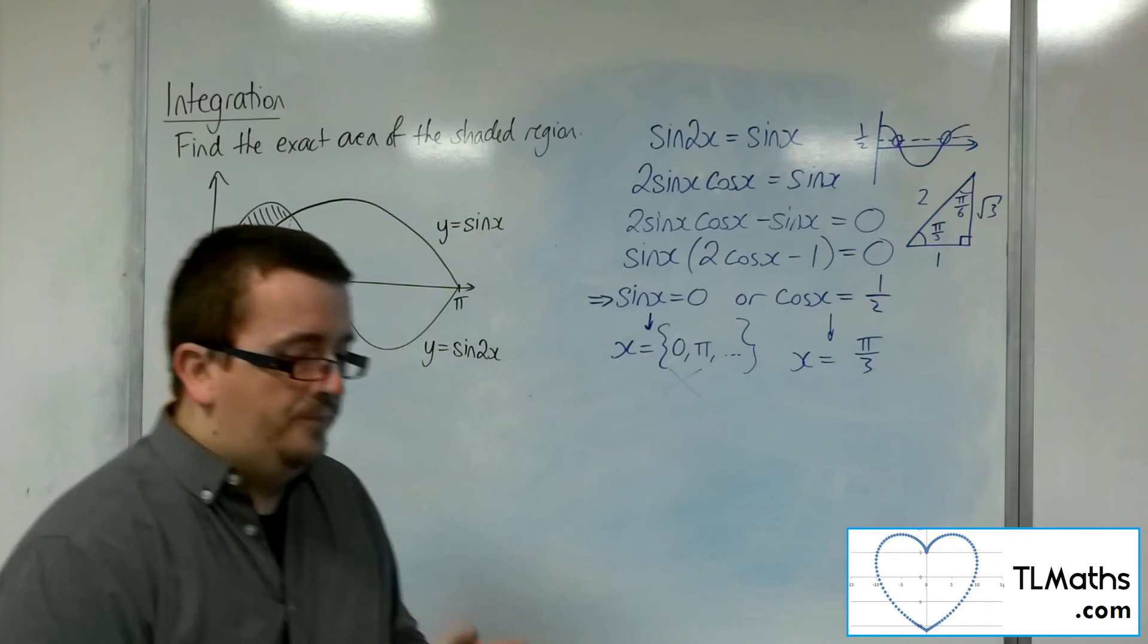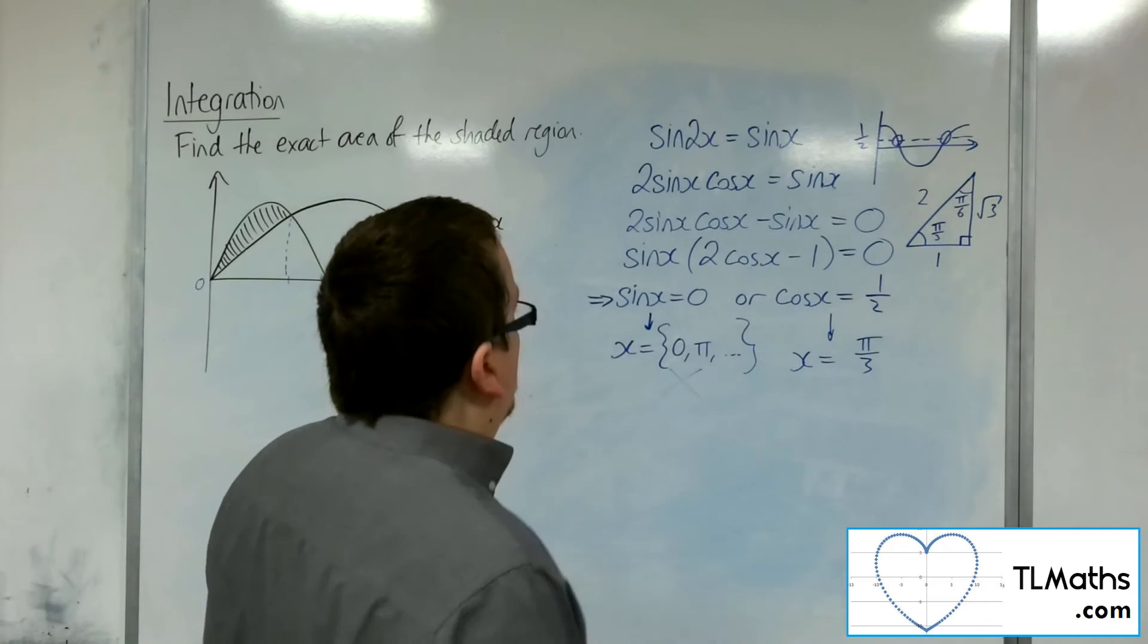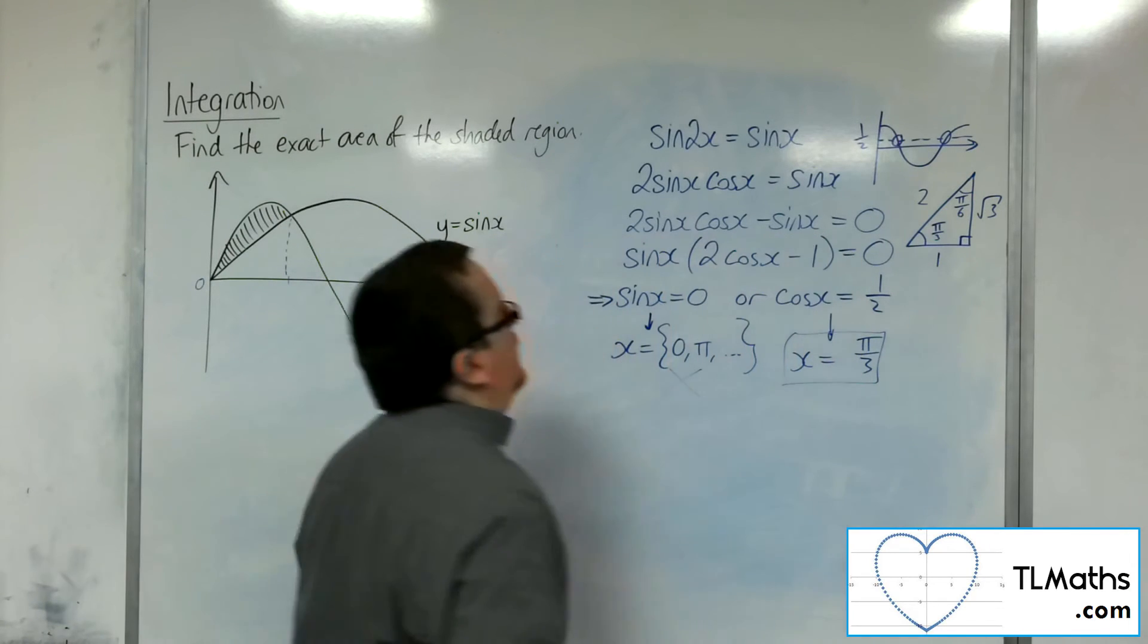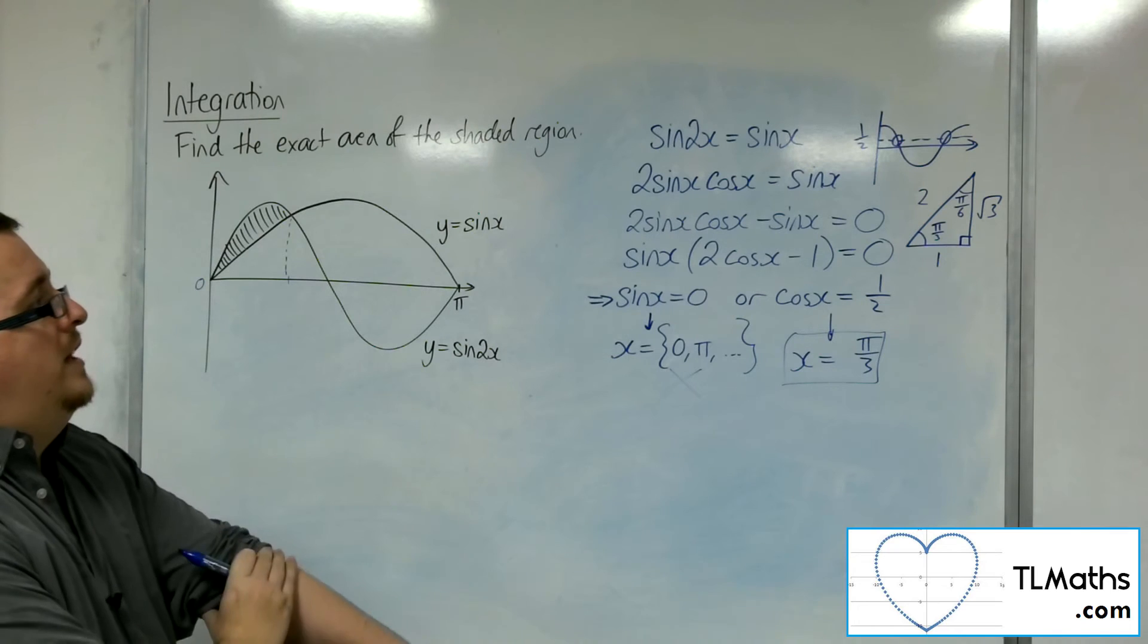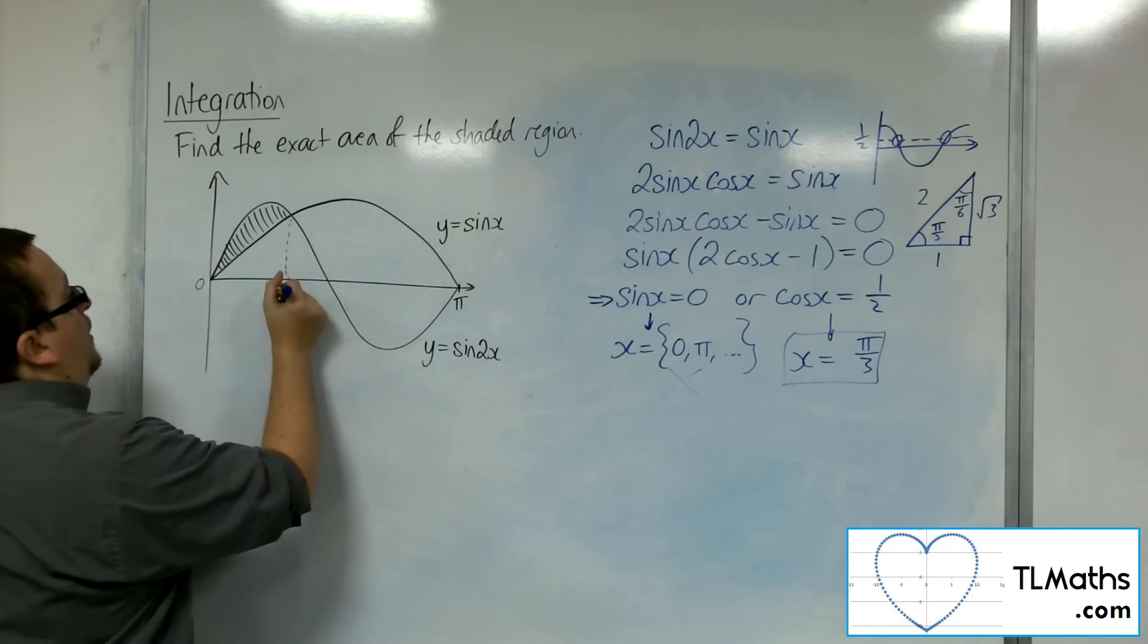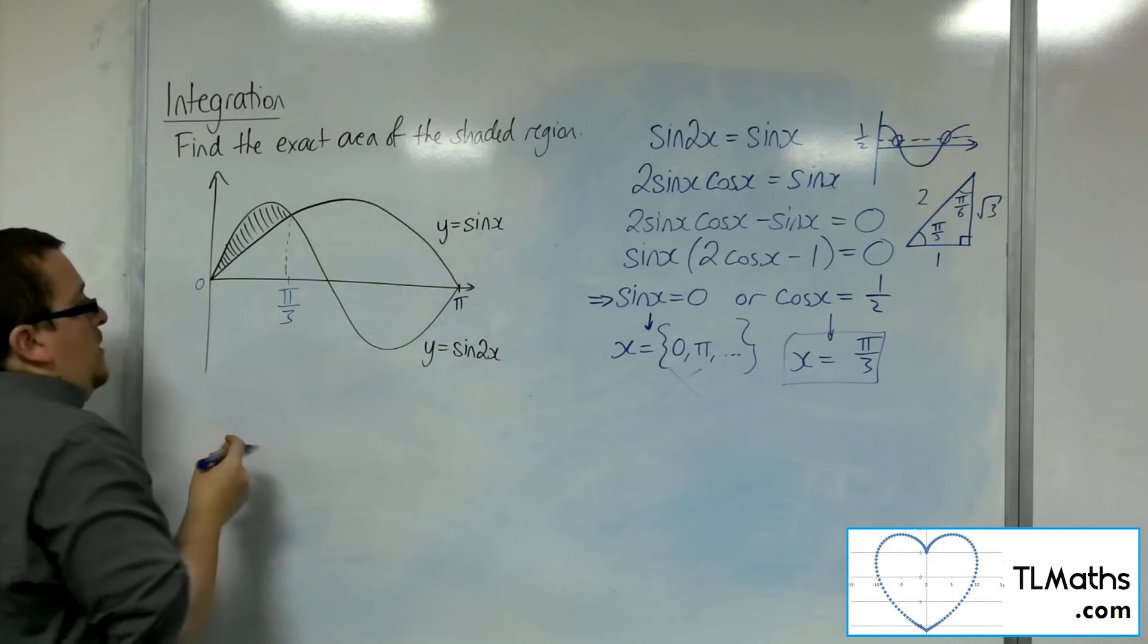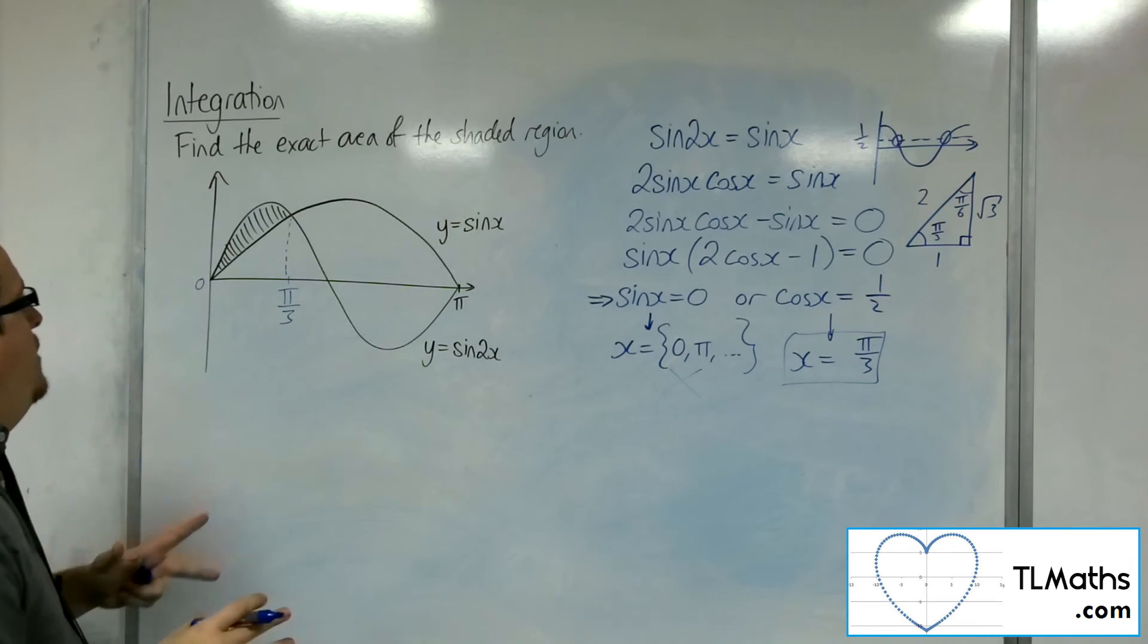OK. So 1 third pi, pi over 3. Right. That is the one that we want. That's the first one that cosine comes across. And so this is pi over 3. Brilliant.